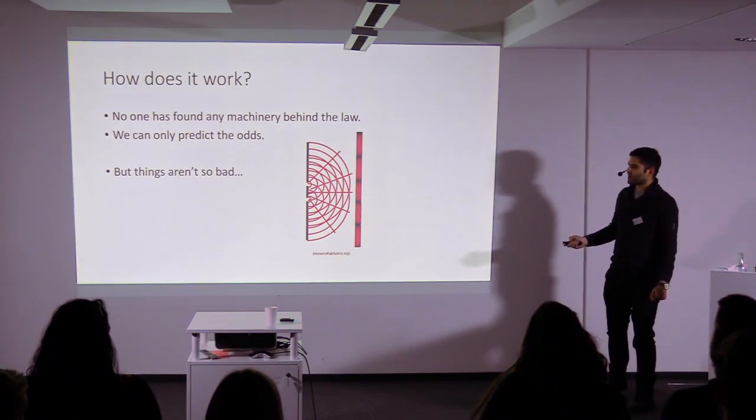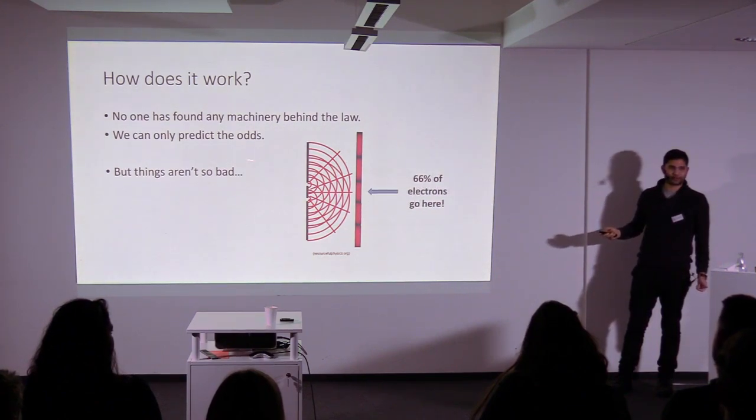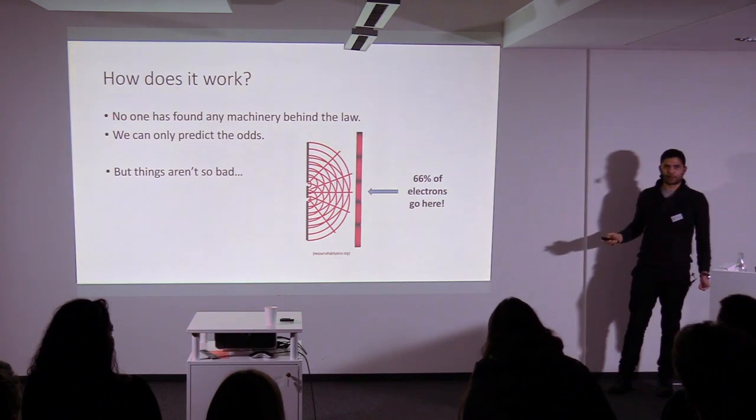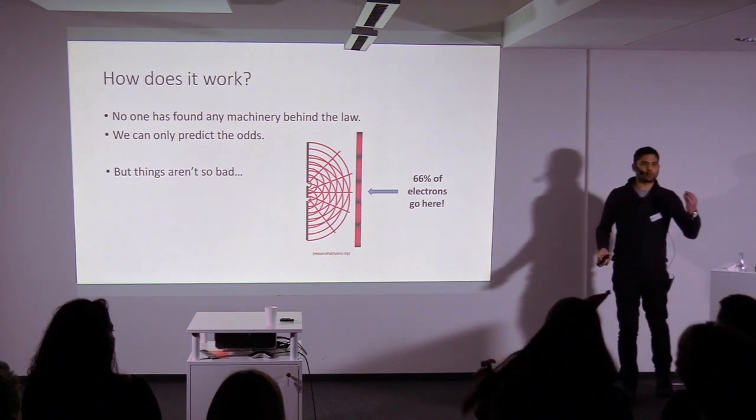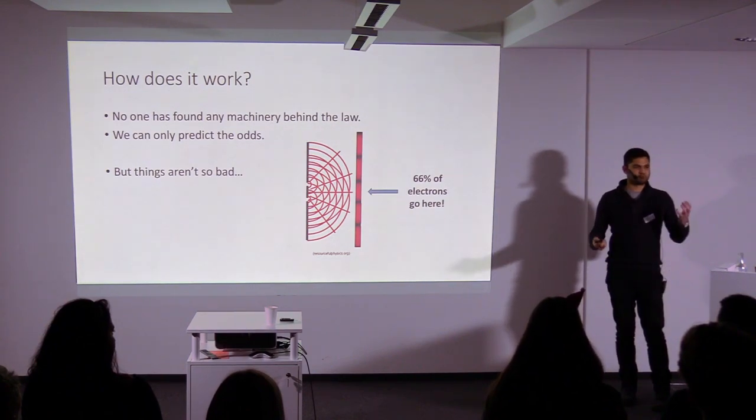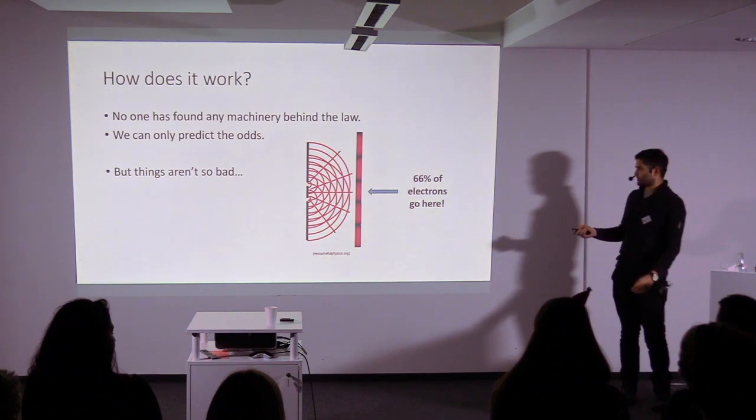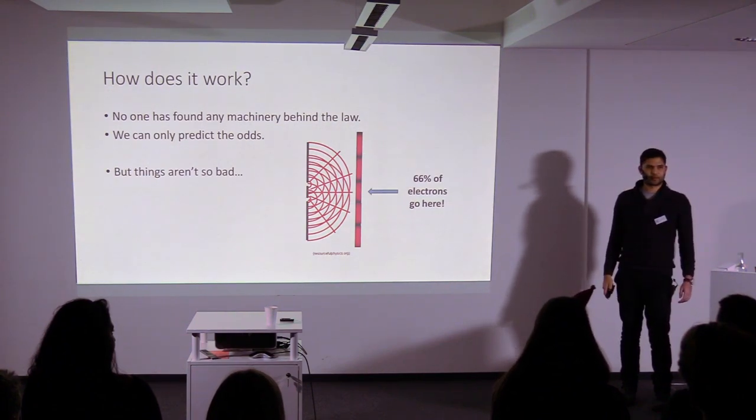But, it's not so bad. Because, in the end, even if you have a double-slit experiment, or rather at least math will tell you, that 66% of the electrons will go in the center. And, you probably don't care about how one single electron travels, and so on and so forth. You're probably interested in how 100 electrons in a group travel from point A to point B. And, you know that 66% would go there.